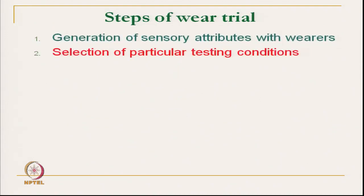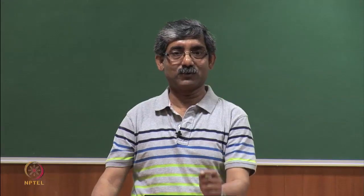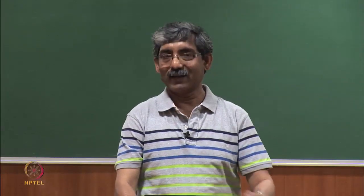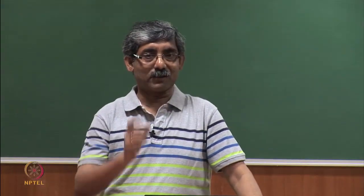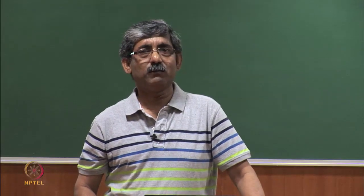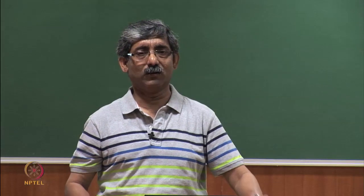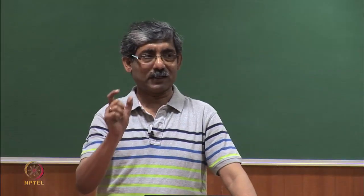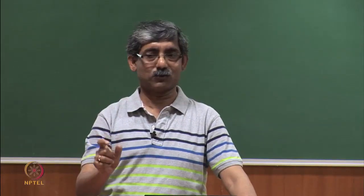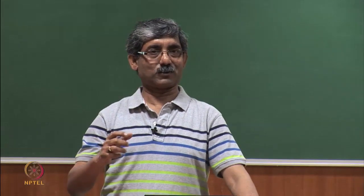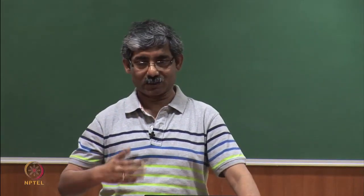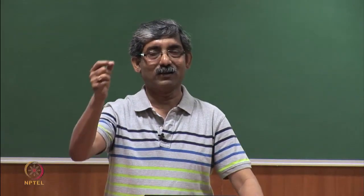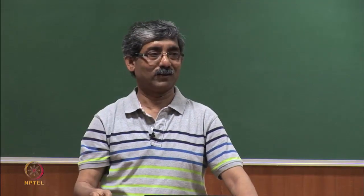The first step is to generate the sensory attributes with the wearer. The wearer has to be defined what type of sensory attributes we are looking at. For example, for extreme cold climate clothing we are developing, we may not require softness or hardness ratings. For a particular requirement, we have to define the sensory attributes — what we are looking at. For extreme cold climate clothing, we are looking at whether it will give warmth or not. According to the requirement, we define that — that is the first step.